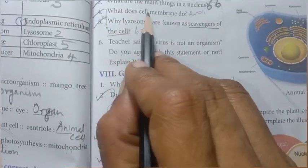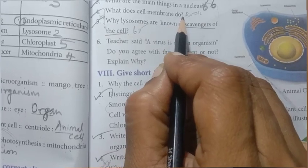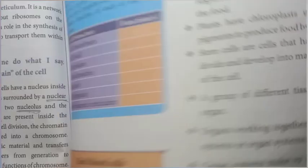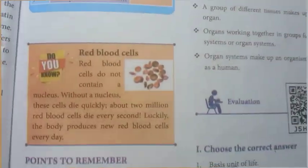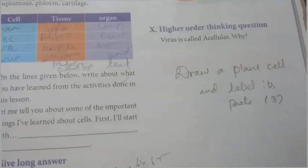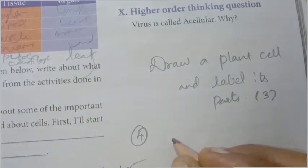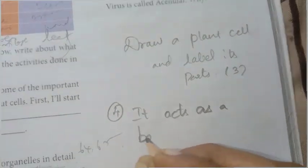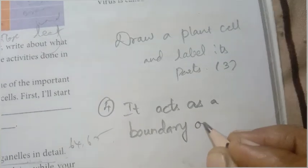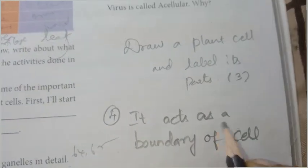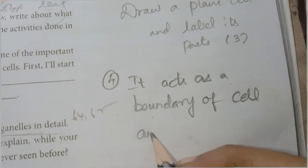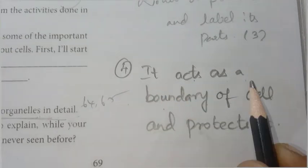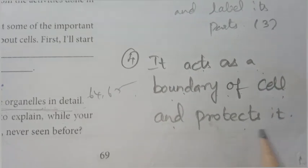Fourth question: What does the cell membrane do? The cell membrane acts as a boundary of the cell and protects it.